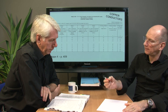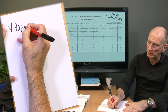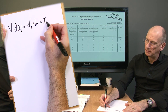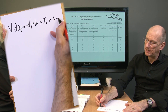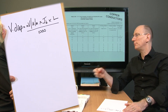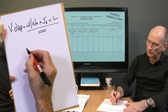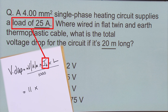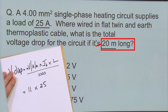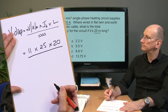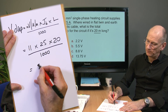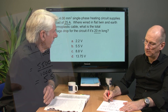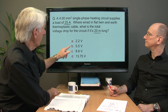All we need to do is input that into the formula. Voltage drop equals millivolts per ampere per metre, multiplied by IB (the load current), multiplied by the length — then divide all of that by 1,000, because we need to convert millivolts to volts. So: 11 multiplied by 25, multiplied by 20, divided by 1,000, gives us 5,500 over 1,000, and the answer is 5.5 volts. Looking at the question again, answer B is 5.5.